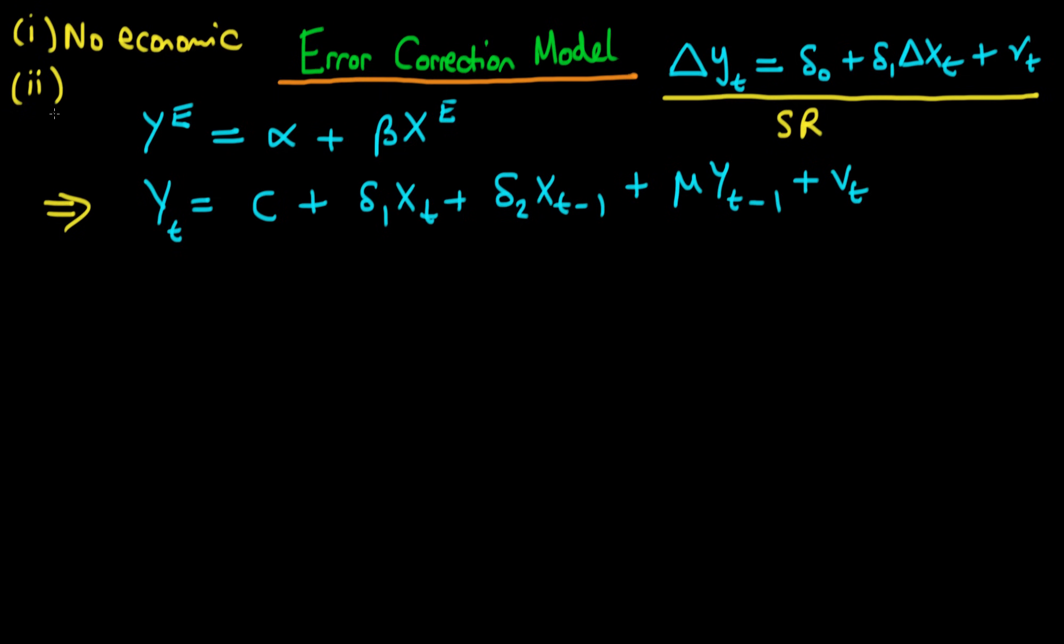The second reason is a theoretical reason which is the fact that if y and x are themselves non-stationary, we are very close to running into the problems of spurious regression. So we know that if y is non-stationary and x is non-stationary there is a high probability that if I run this type of regression even if they're completely unrelated there will be some statistically significant value of delta 1 which we obtain.